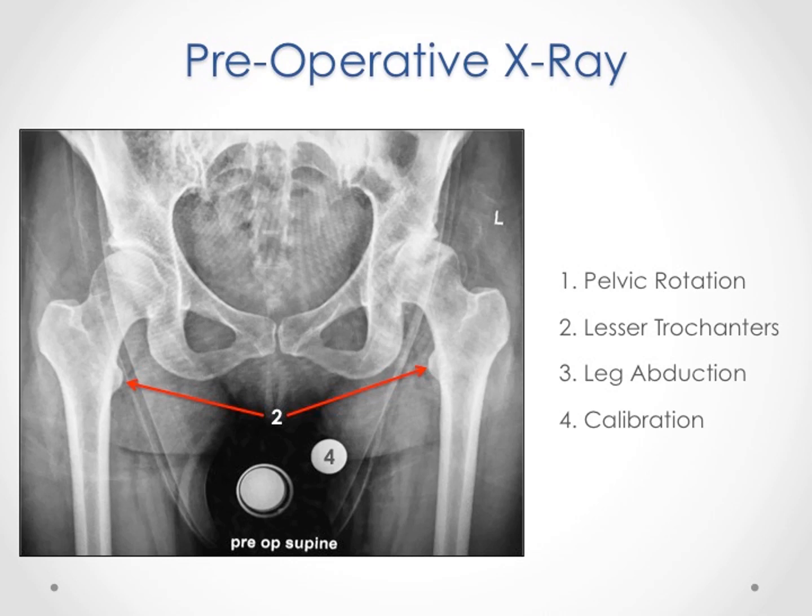The other important factor, number three, is abduction and offset. Leg offset is another aspect of a hip replacement that is essential to stability and patient satisfaction. Offset is measured by the distance from the top of the lesser trochanter to the pelvis, and the leg must be positioned symmetrically so the offset can be reproducibly measured. Finally, we calibrate this image with a 25mm ball. This ball is placed at the depth of the femur so the measurements we generate from templating are accurate to the millimeter.